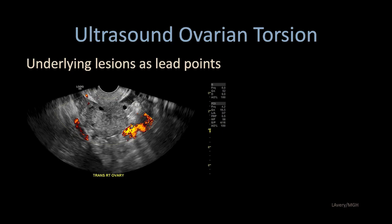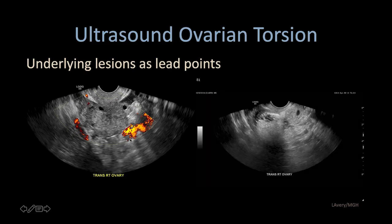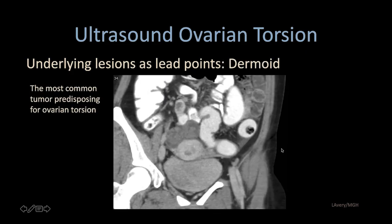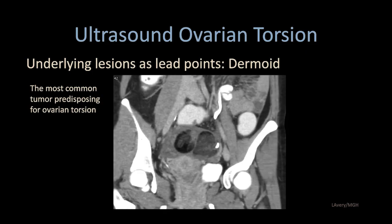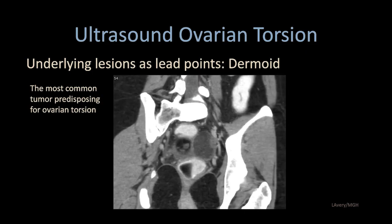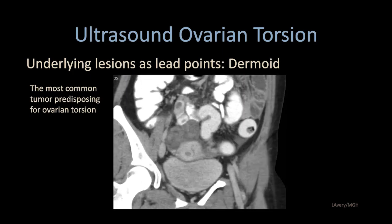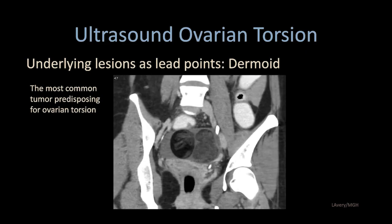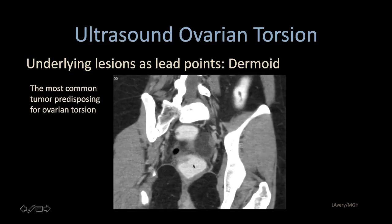Ovarian torsion often happens in the setting of an underlying lesion — a lead point. Here we have an ovary with enlarged follicles, heterogeneous echo texture, and no flow on power Doppler. More laterally within the adnexa, we see the heterogeneous tip-of-the-iceberg appearance of a dermoid cyst. Underlying lesions such as a dermoid are frequent in ovarian torsion. This is a very large dermoid with heterogeneous fat, calcifications, and soft tissue elements, positioned up and over the uterine fundus in a torsion configuration.